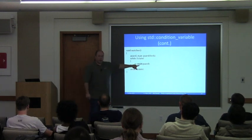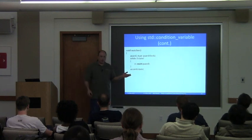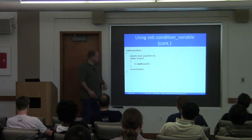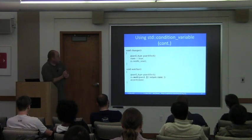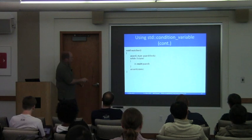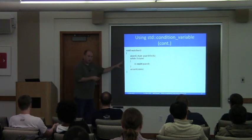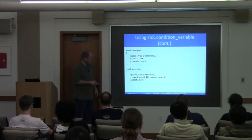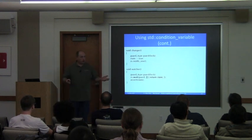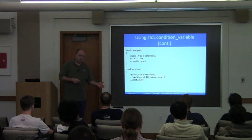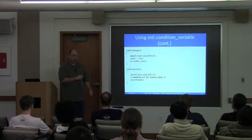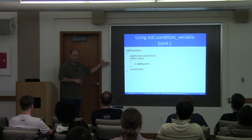You can write a while loop explicitly examining the state, or there is a variation where you provide a predicate. All it does is: while the predicate is not satisfied, wait. You can do it in one line with a lambda, or use the while loop form. Either way the behavior is the same.